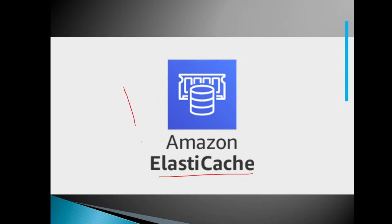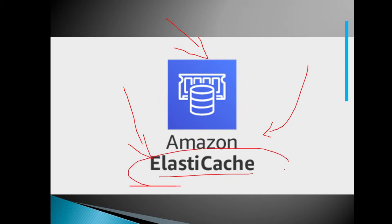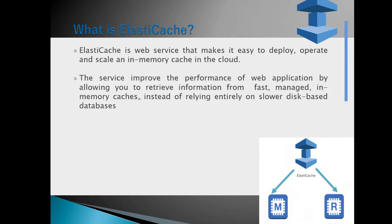The next service is ElastiCache. To improve the performance of your website or database, similar to how CloudFront caches data at edge locations, for databases we use ElastiCache. ElastiCache is a web service that makes it easy to deploy, operate, and scale an in-memory cache in the cloud. It improves web application performance by allowing you to retrieve information from a fast, managed in-memory cache instead of relying entirely on a slower disk-based database.